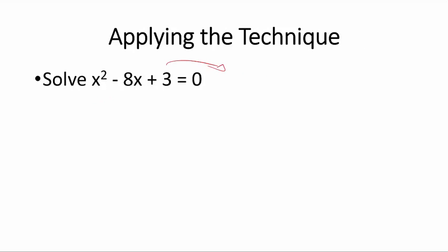Let's first add negative 3 to both sides of this equation. Now we know that we can complete this left hand side by adding 16 units. If we do it to one side, we do it to the other.